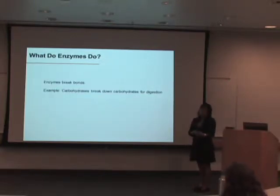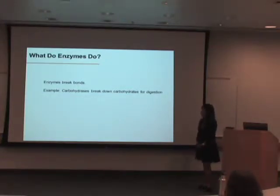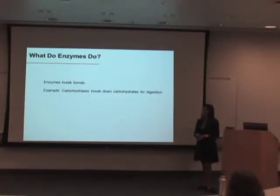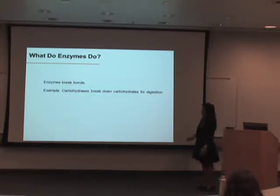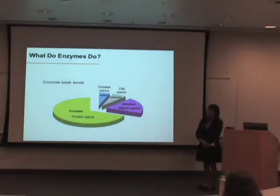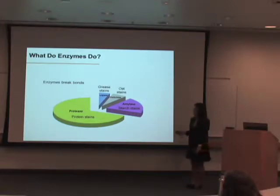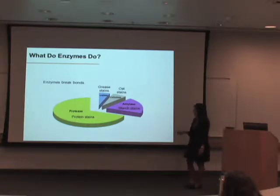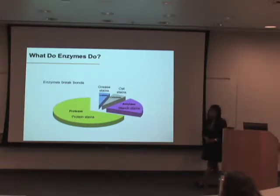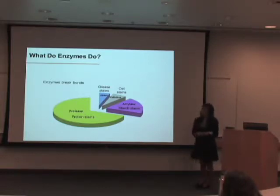So what do enzymes do? Enzymes break bonds. An example is carbohydrases, which break down carbohydrates into simpler molecules for your digestive system. The idea here is: you get hamburger grease on your clothes, and the enzyme breaks it down into smaller parts that can be washed away. The different types of enzymes used in detergents are proteases, which break down protein-based stains — so amide bonds — lipases, which break fat bonds for grease stains, cellulase for oat stains, and amylase for starch stains. We're mainly focused on lipase, so breaking fat bonds.